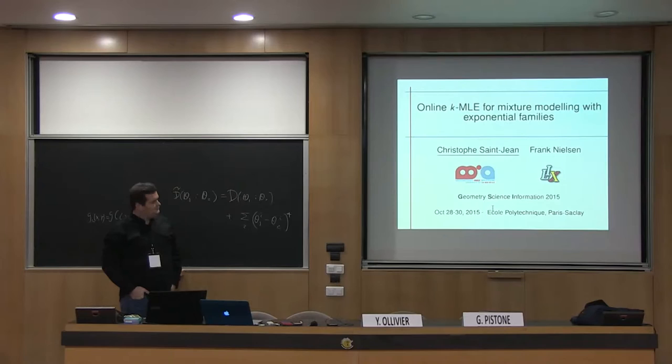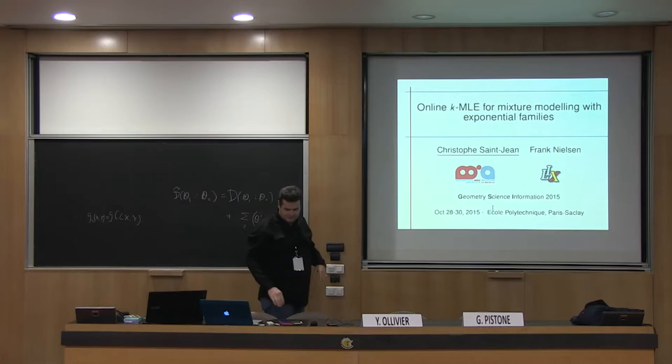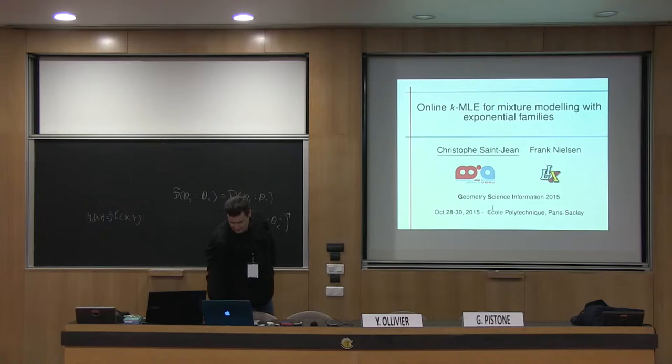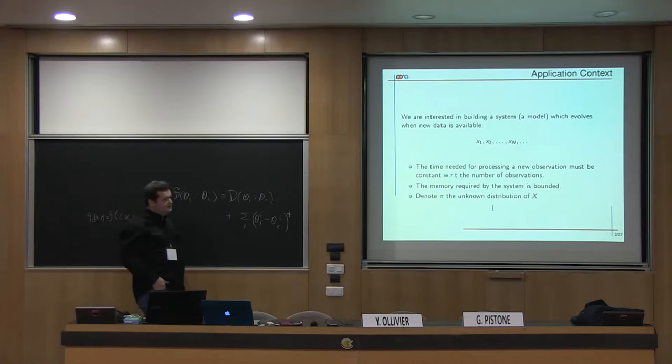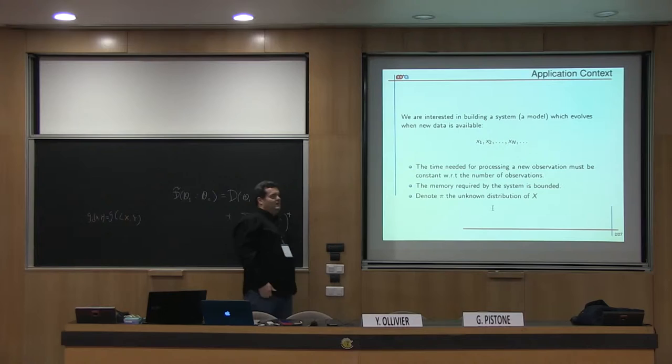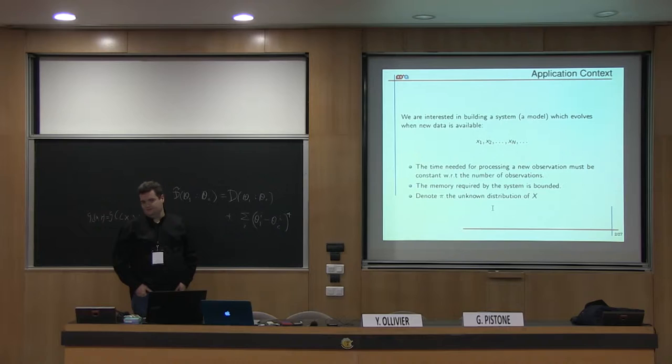So this is a talk on online mixture modeling for exponential families. This is joint work with Fran Mützen and Christophe Saint-Jean, a computer scientist from the University of La Rochelle. What we want to do is build a system, a model that takes observations one at a time and estimates the parameters of this model, adapting the parameters to each new observation. We want the time needed for processing a new observation to be constant with the number of observations, and of course the memory of the system is bounded so we can't keep all observations.